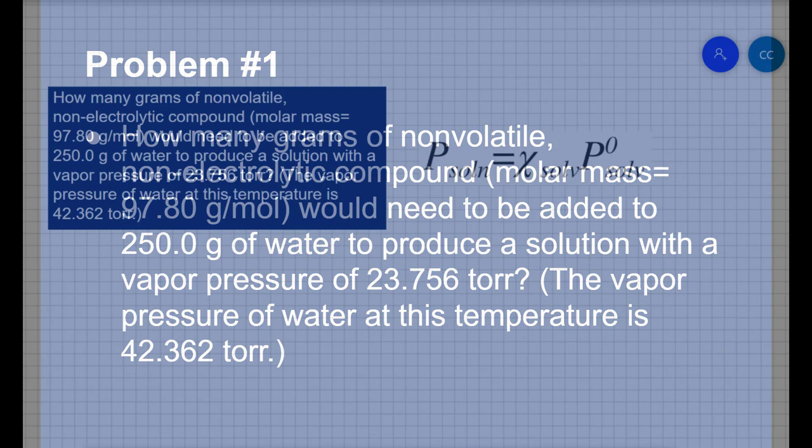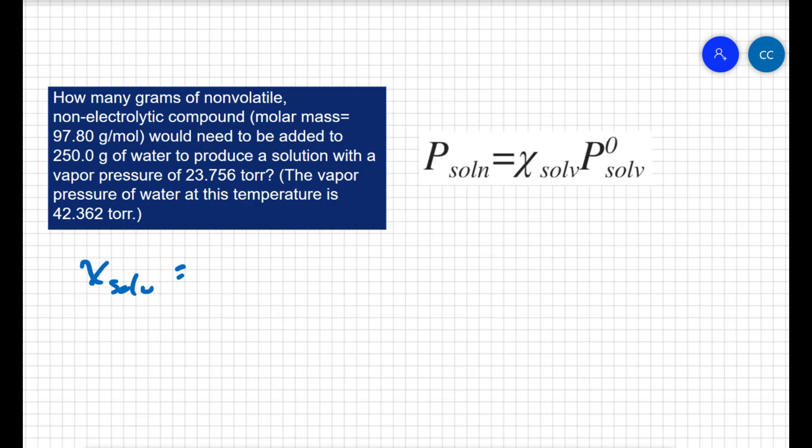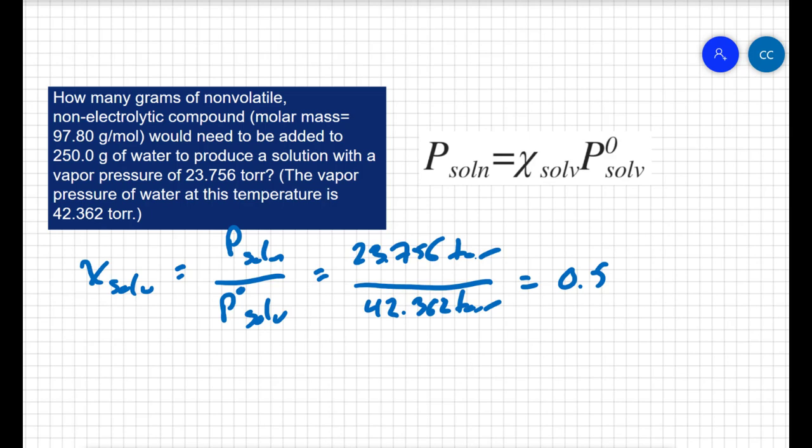We can rewrite Raoult's law and find the mole fraction of the solvent right off the bat. I can say the pressure of the total solution over the pressure of the pure solvent will equal my mole fraction. We know that the total solution is 23.756 torr, and we know that pure water at this temperature is 42.362 torr. So that's giving me a mole fraction of my solvent of 0.56078. Looks like I've got five sig figs in all my data, so let's go with that.